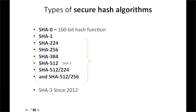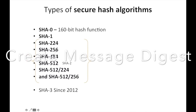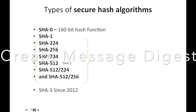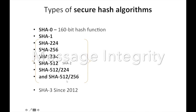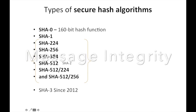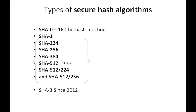All of these algorithms are iterative one-way hash functions that can process a message to produce a condensed representation called a message digest. The message digest is used as part of message integrity — any change in the message will result in a different message digest.